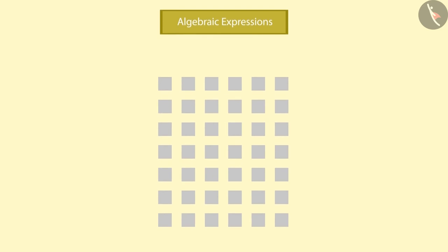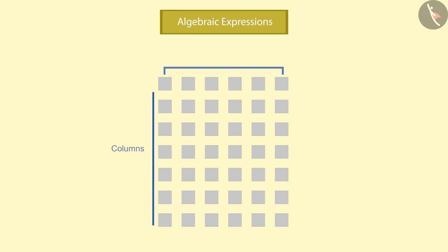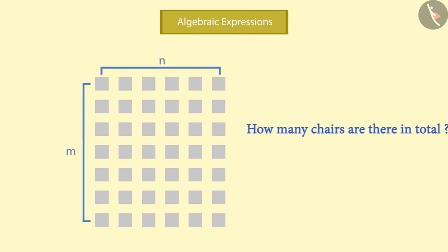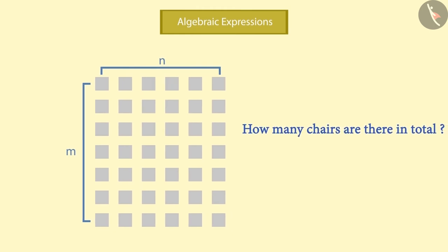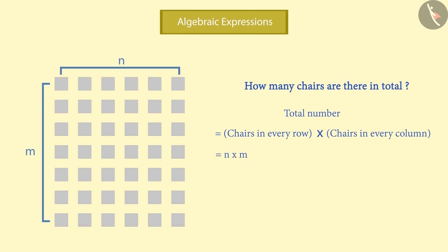Let us suppose this is a cinema hall. We can see that the chairs are arranged in rows and columns. Suppose there are a total of N chairs in each row and a total of M chairs in each column. The total number of chairs will be equal to the product of M and N — the multiplied result of chairs in each row and each column equals the total number of chairs in the cinema hall.